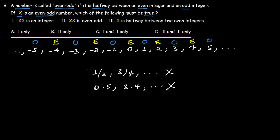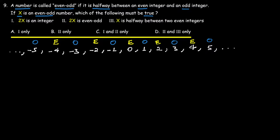Now let's understand the definition of even-odd numbers with an example. Randomly, take an even number and an odd number and find the halfway point between them — that gives us an even-odd number. For example, take even number negative three and odd number five. The halfway point between negative three and five is an even-odd number.